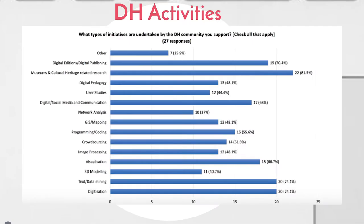This graph gives you an idea of the different activities undertaken by communities in the institutions that took part in our survey. Most of the activity was conducted around museums and cultural heritage-related research, digitization, text and data mining, digital editions, and digital publishing — and as you can imagine, many of these activities involve the use of library collections.